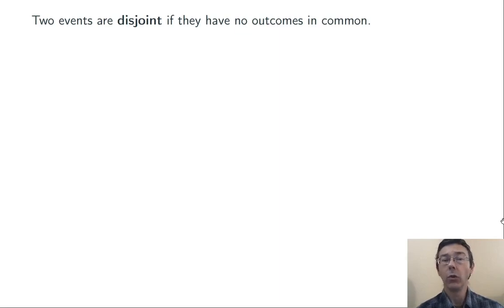Two events are disjoint if they don't have any outcomes in common. To say it differently, if they can't both occur.